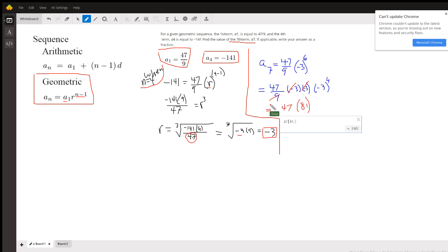And if you have to do this calculation manually, you might say two of these factors of negative 3 cancel with this 9. Negative 3 to the fourth power is positive 81. 81 times 47 is 3,807. There you go.